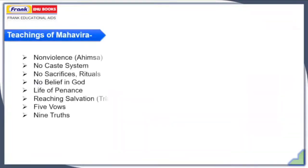Coming to the teachings of Lord Mahavira, they include the principle of non-violence, which was also followed by Mahatma Gandhi. Mahavira was against the discriminatory caste system and promoted social equality. He was against sacrifices and rituals and did not believe in God. He said that in order to achieve salvation, one must go through the path of penance. He also formulated a theory called Triratna to achieve salvation, as well as five vows known as Pancha Mahavrata to be followed by every Jain Sanyasi, and the nine truths preached by Lord Mahavira.